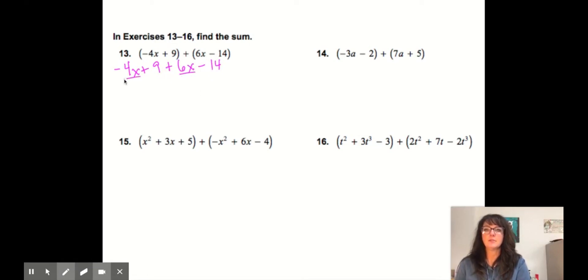So I would look at this as negative 4x plus 9 plus 6x minus 14. Now, underline like terms. Or you can circle them. Remember we used to circle them with the sign in front of it.